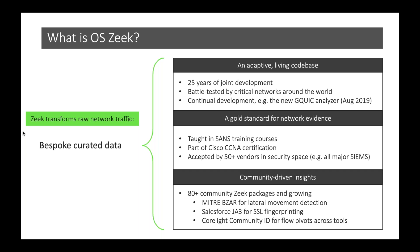The community-driven insights are amazing. Today we'll talk specifically about BZAR and what Mark has done, but let's not forget what Salesforce has released with JA3 fingerprinting of TLS connections, hash fingerprinting of SSH connections, and the Google QUIC analyzer. Community ID allows you to pivot to other data sources — it's very comparable to the unique identifier available in Zeek. There are over 80 community-driven insights and it's still growing.